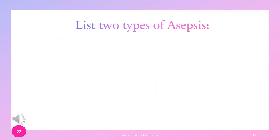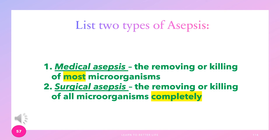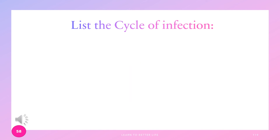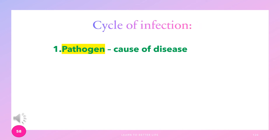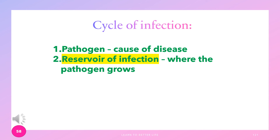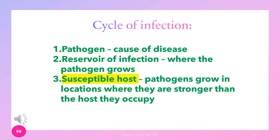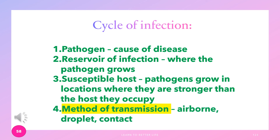List two types of asepsis: medical asepsis is the removing or killing of most microorganisms; surgical asepsis is the removing or killing of all microorganisms completely. List the cycle of infection: first, pathogen — the cause of disease; then reservoir of infection — where the pathogen grows; next, susceptible host — pathogens grow where they are stronger than the host; finally, method of transmission — through airborne, droplet, or contact.